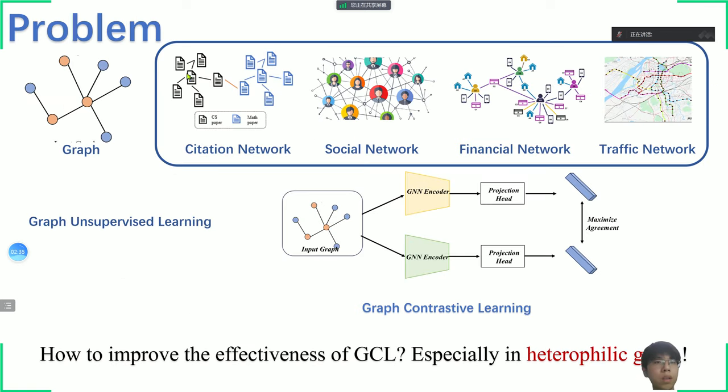This is the problem. Graph neural networks have captured widespread attention for their inspirational ability to model graph structure data, such as social networks, traffic networks, and so on. As graph unsupervised learning, a research advanced technology like Graph Contrastive Learning has emerged as a promising self-supervised learning method, showcasing their potential in addressing diverse downstream tasks.